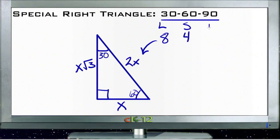And then the medium side would be 4 times √3, or 4√3 units long. We don't have to do any other calculations at all.